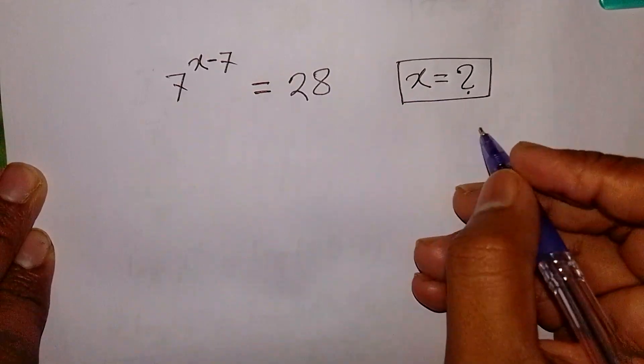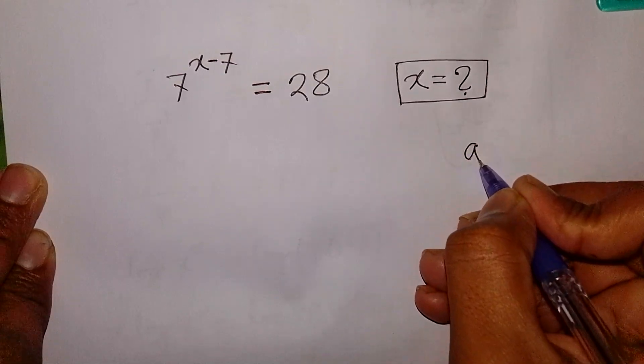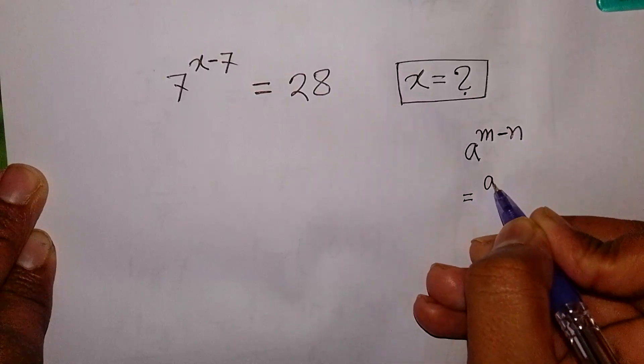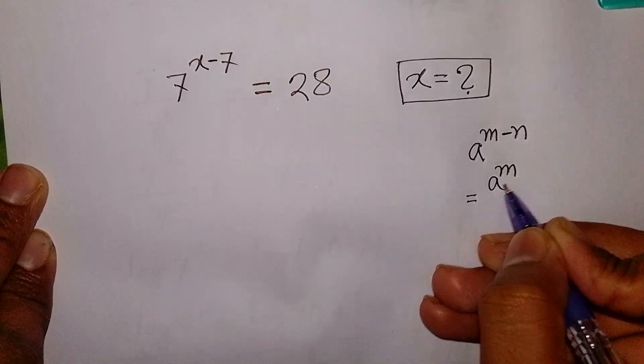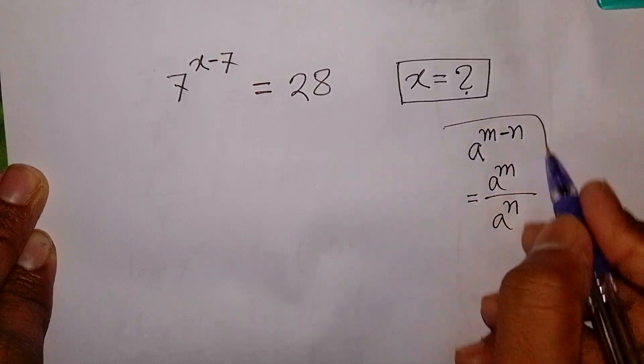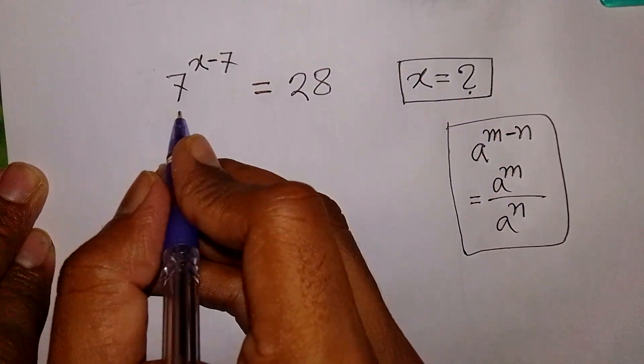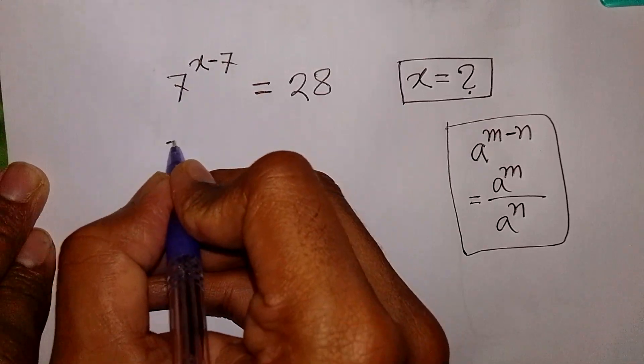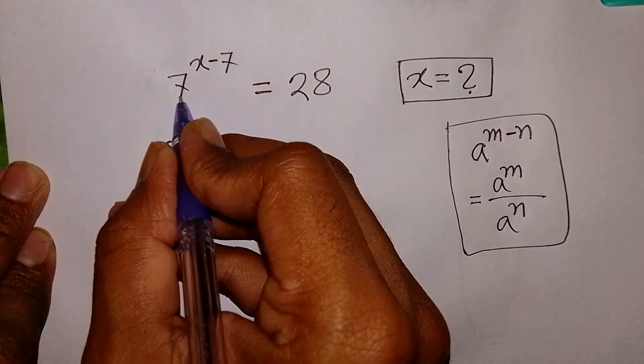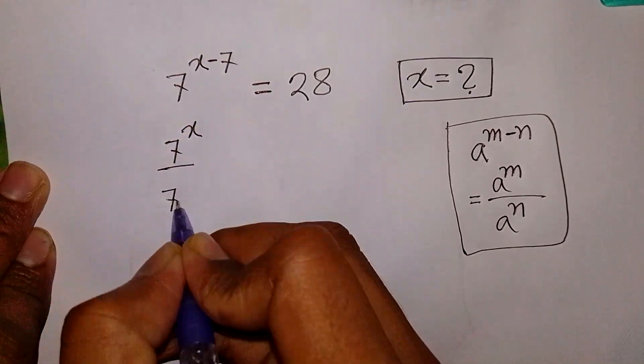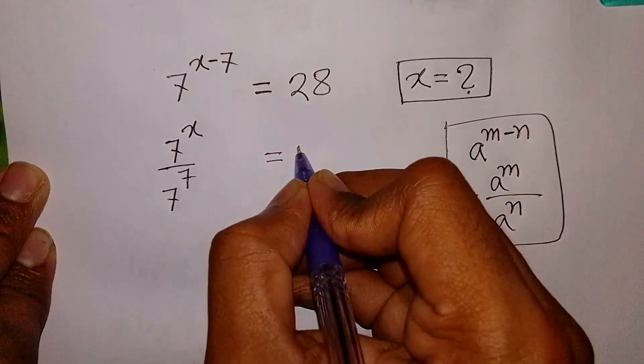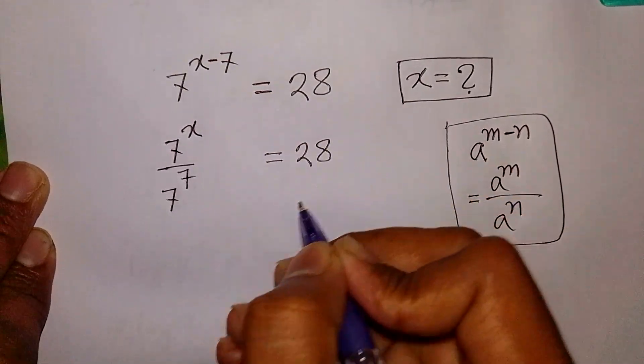So, at first we apply this exponential rule that a power of m minus n is equal to a power m over a power n. So, 7 power of x minus 7 is same as 7 power x over 7 power 7 is equal to 28.